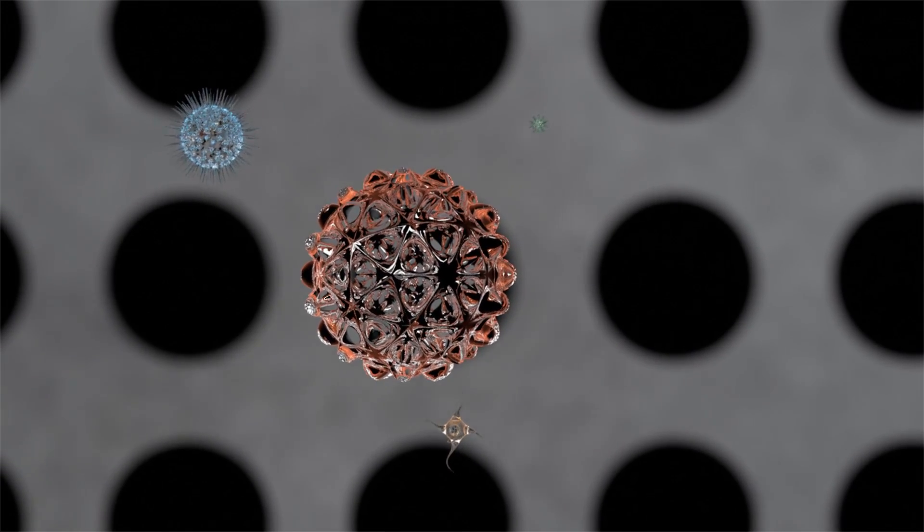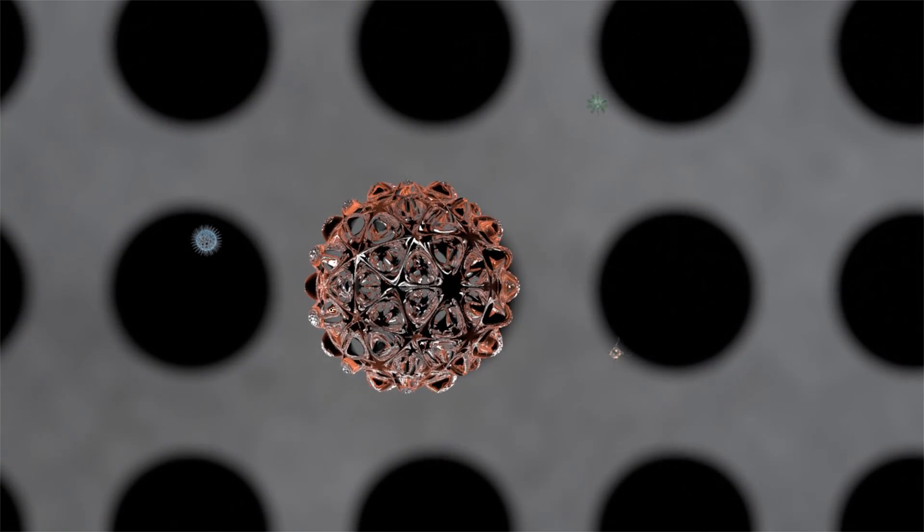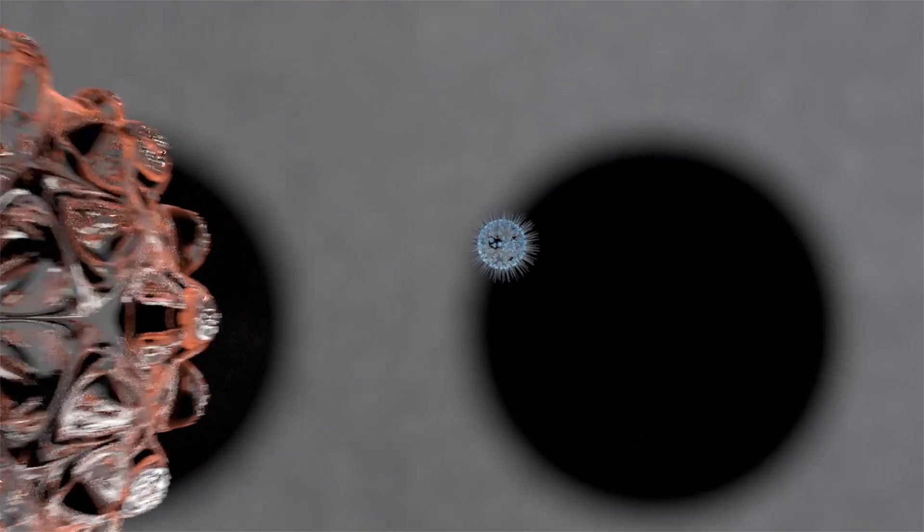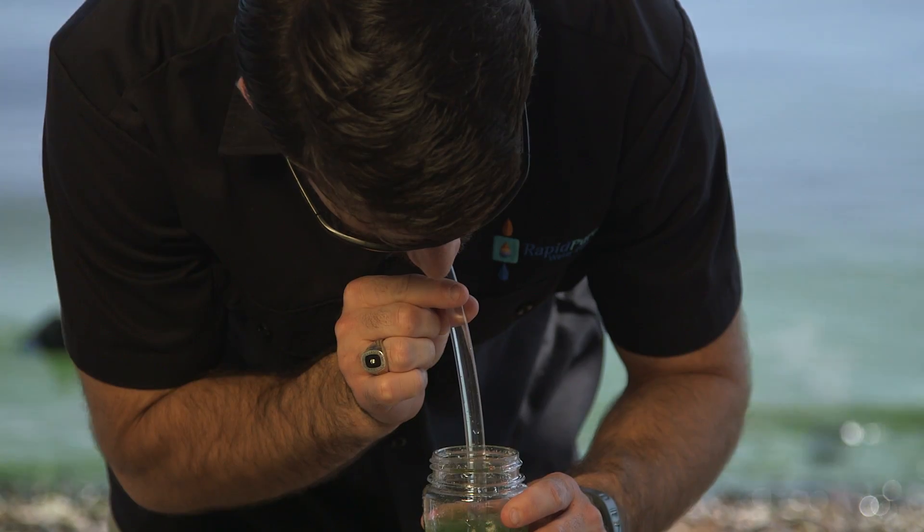Even worse, the 0.2 micron pore size certainly filters bacteria and cysts, but viruses and other contaminants are 100 times smaller,